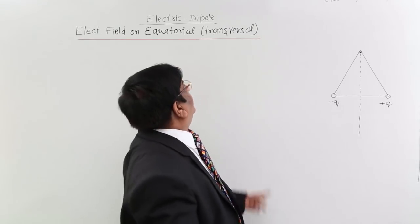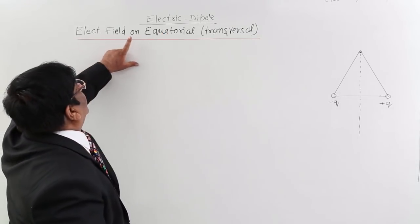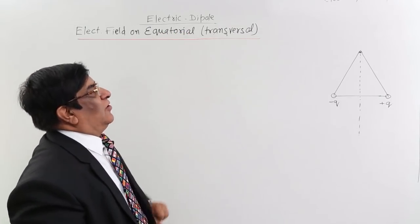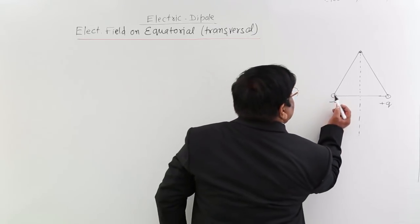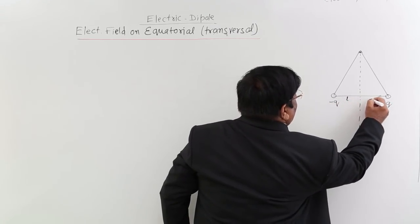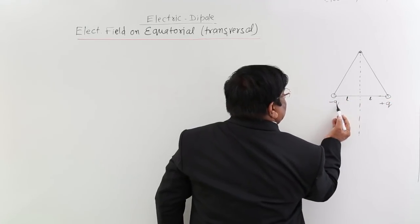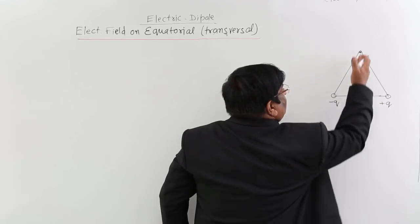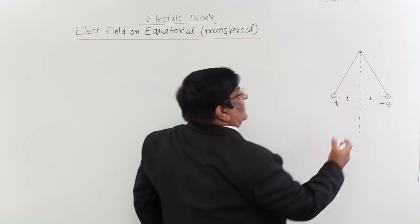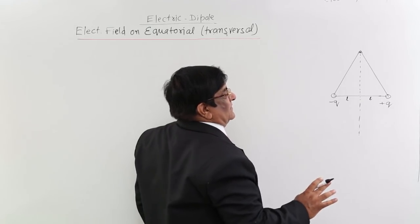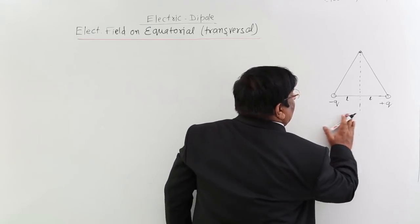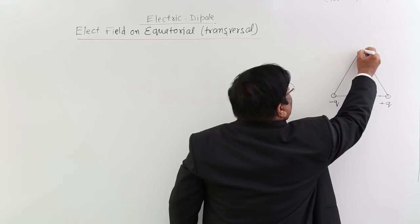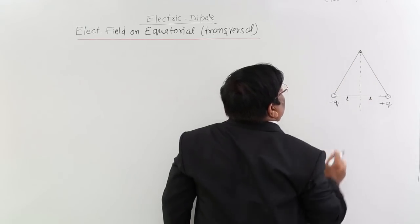What we are studying now is the electric field made by a dipole in a position which we call the equatorial or transversal position. This is a dipole with length L on each side, so the total length is 2L between the two equal but opposite charges. This perpendicular bisector line is known as the equatorial line or transversal line. There may be any point on this equatorial line, and the distance of this point from the line is R.